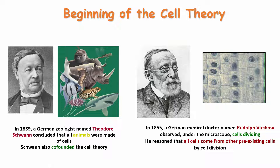Coming back to cell theory: in 1839, a German zoologist named Theodor Schwann concluded that all animals were made up of cells, and he co-founded the cell theory. He found that all animals — humans, chimpanzees, snakes, frogs, fish — were made up of cells.